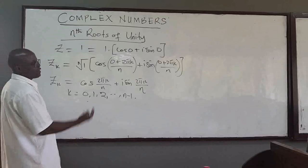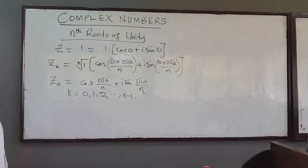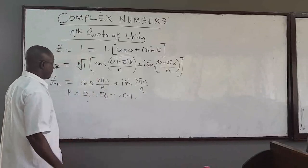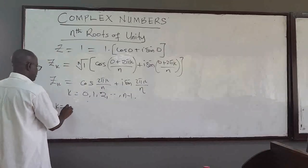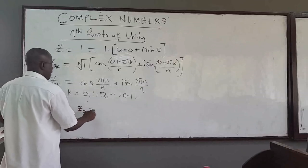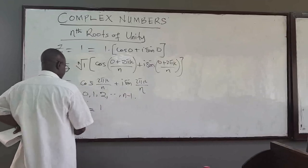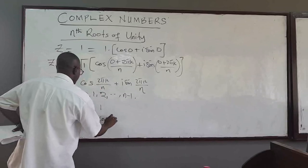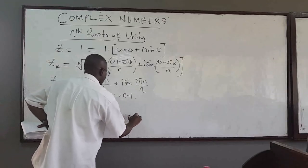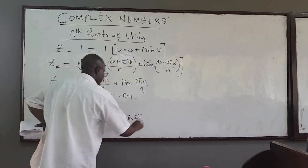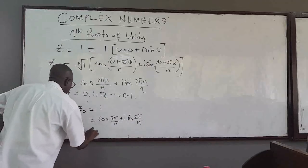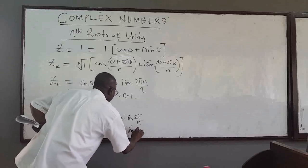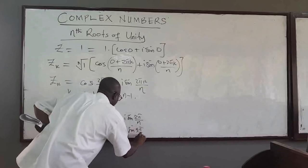This formula gives us the nth roots of unity. So when k equals zero, we get z0 = 1, since cosine of zero is one and sine of zero is zero. When k equals one, we get z1 = cos(2π/n) + i·sin(2π/n). When k equals two, we get z2 = cos(4π/n) + i·sin(4π/n).